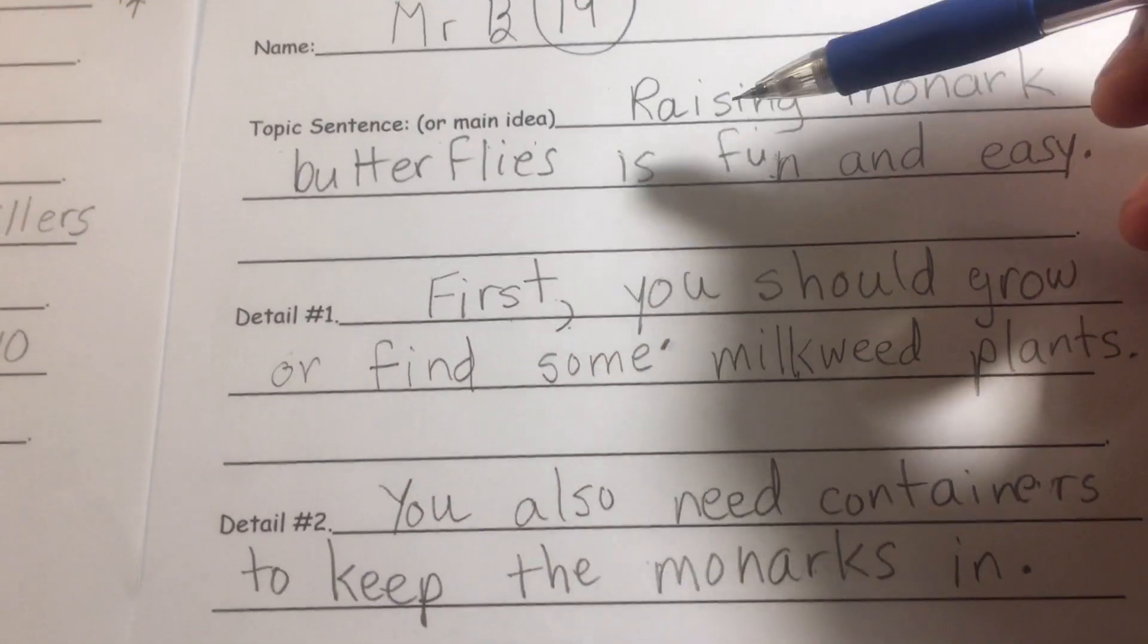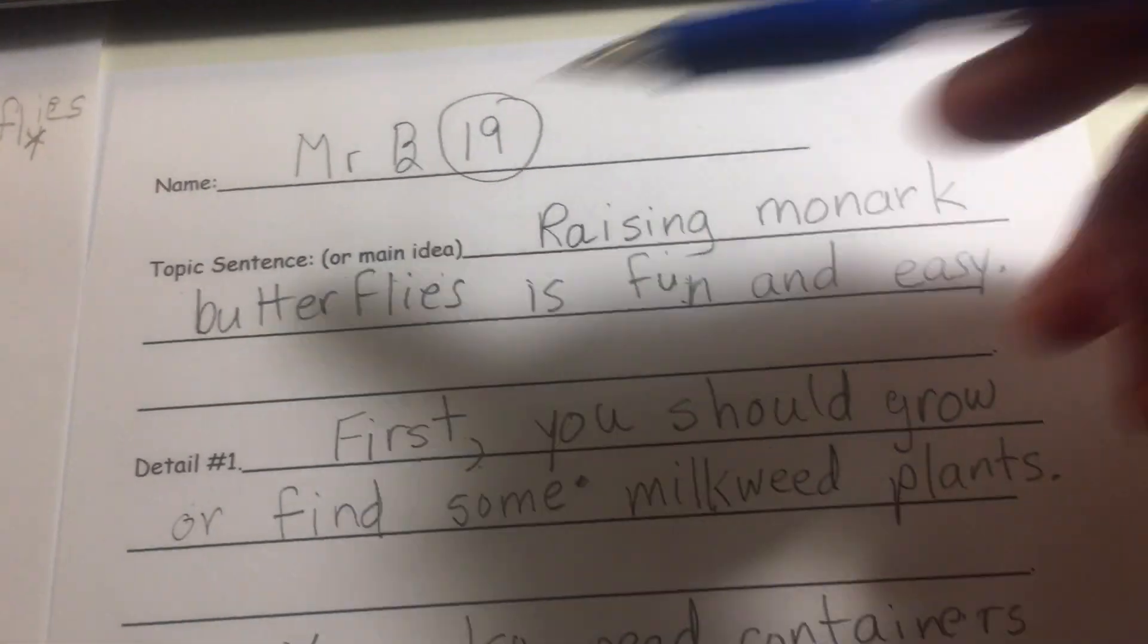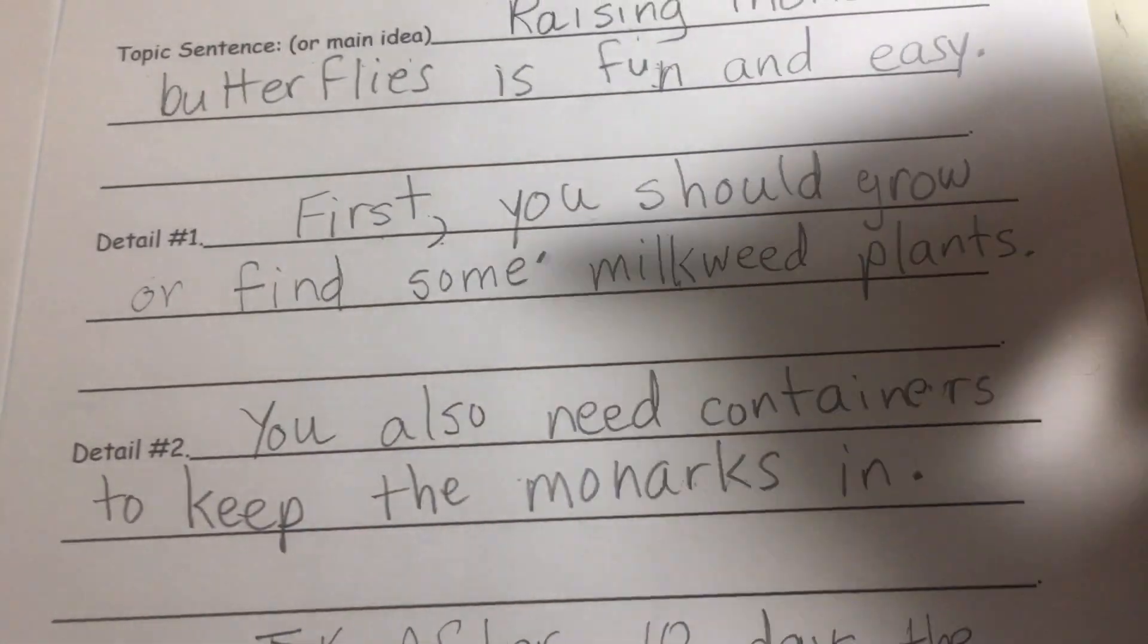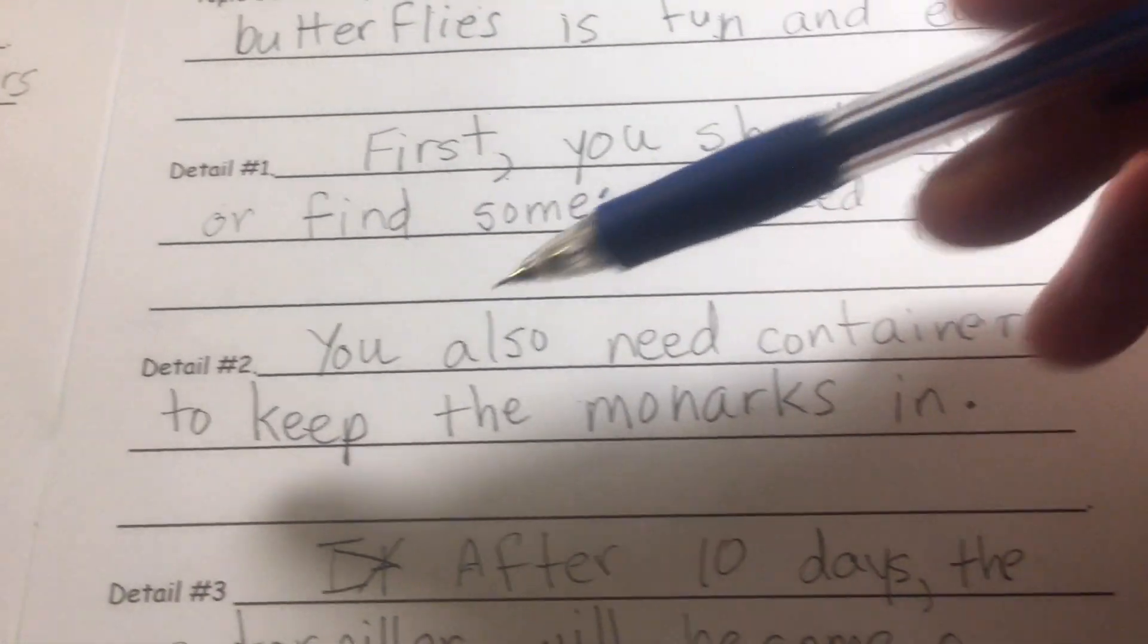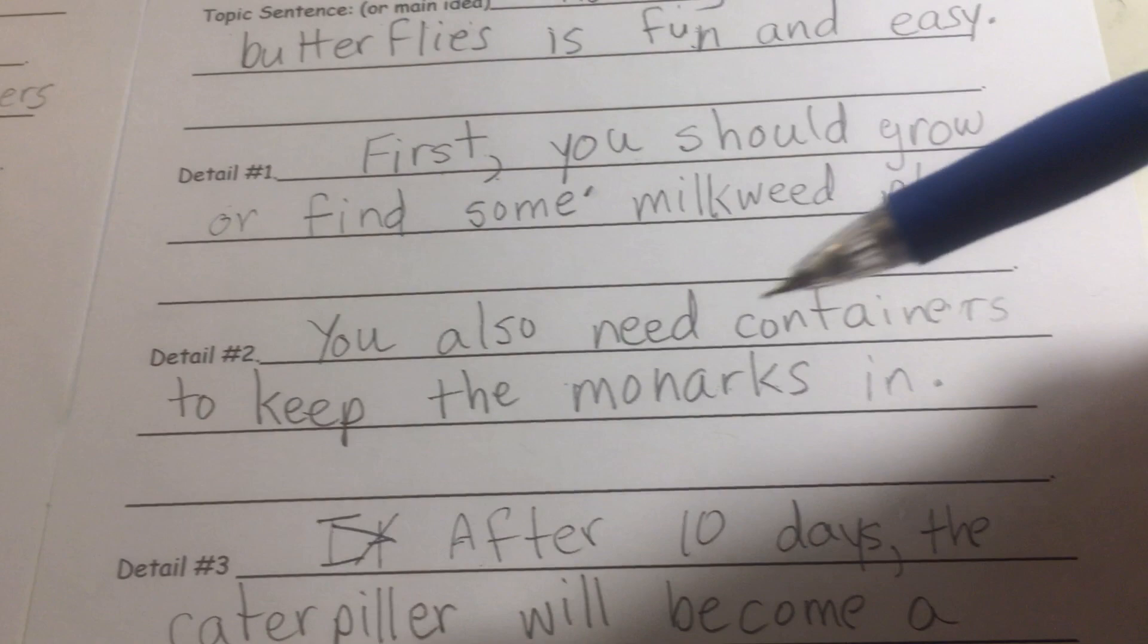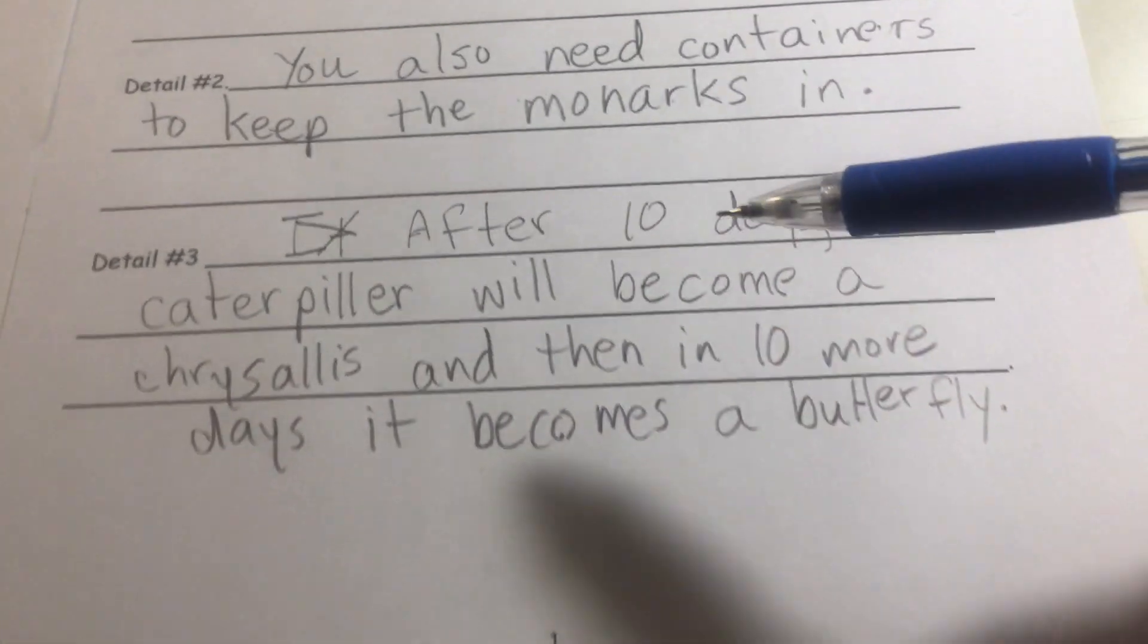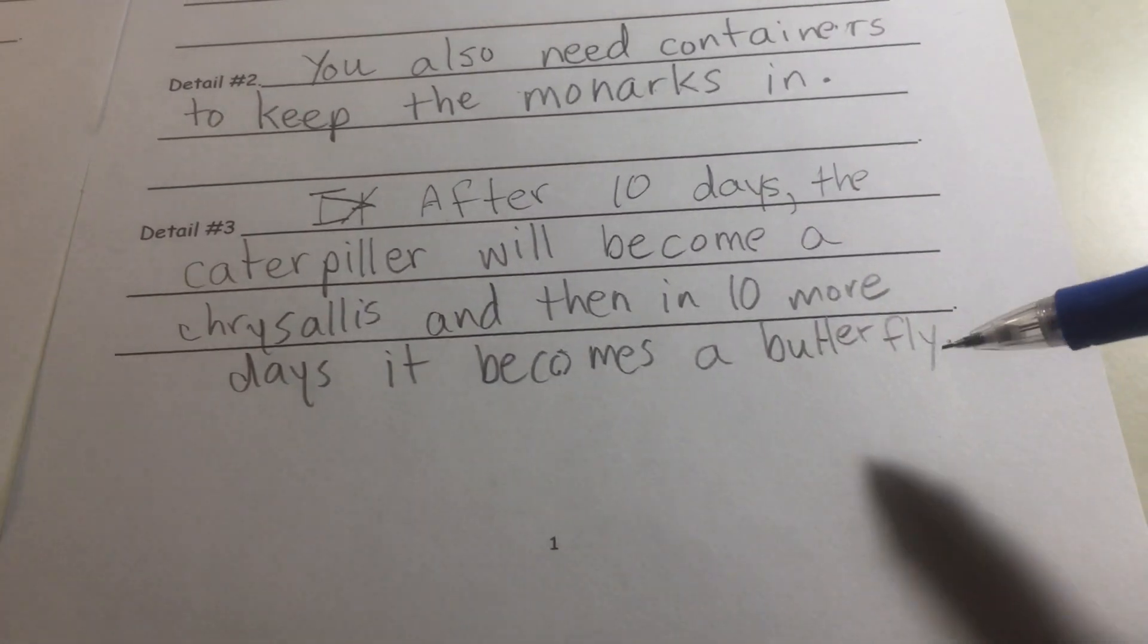So here's my topic sentence: raising monarch butterflies is fun and easy. Detail number one: first you should grow or find some milkweed plants. Detail number two: you also need containers to keep the monarchs in. Detail number three: after 10 days, the caterpillar will become a chrysalis, and then in 10 more days, it becomes a butterfly.